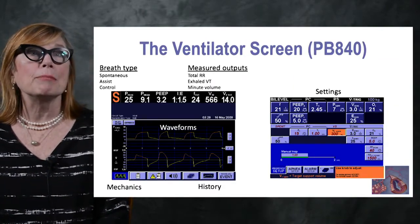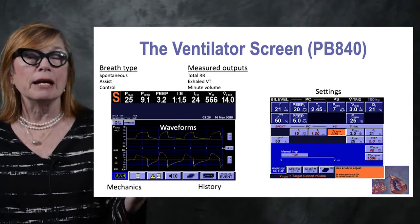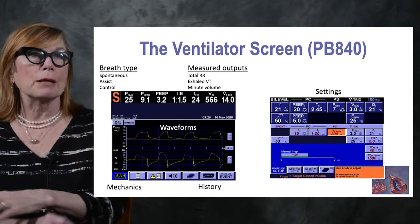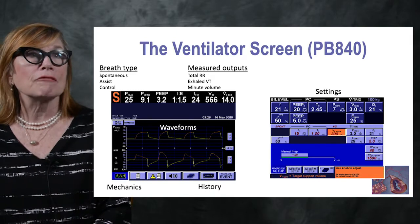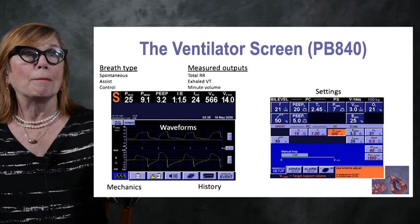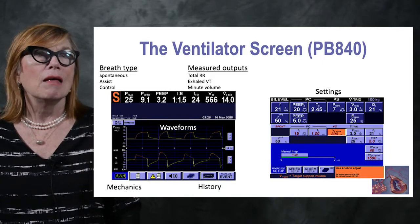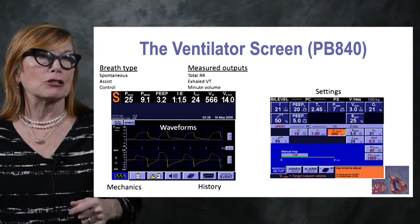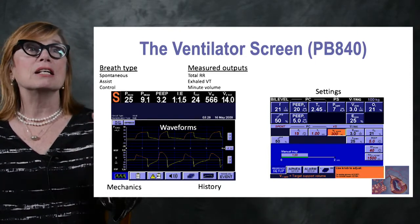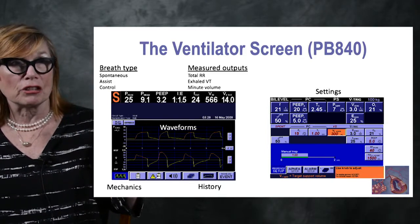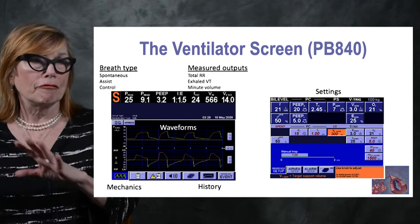Looking at the screen of the Puritan Bennett 840 — the predominant ventilator we use at Grady Hospital — in the upper left you see a big 'S' when the patient is taking a spontaneous breath, a big 'A' if the breath is spontaneous but then assisted by the ventilator, or a big 'C' when it's a complete ventilator breath. So we have three types of breath: total spontaneous, assisted, and controlled.